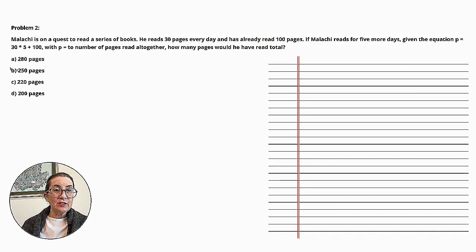Malachi is on a quest to read a series of books. He reads 30 pages every day and has already read 100 pages. If Malachi reads for 5 more days, given the equation P equals 30 times 5 plus 100, with P equal to the number of pages read altogether, how many pages would he have read in total? Let's begin.